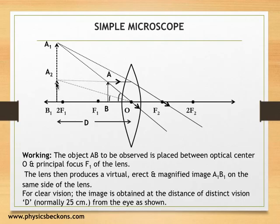At this distance D, the object forms this angle A₂OB₁ on the eye, whereas the image forms much larger angle A₁OB₁.